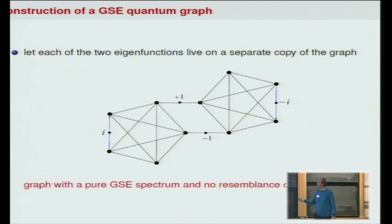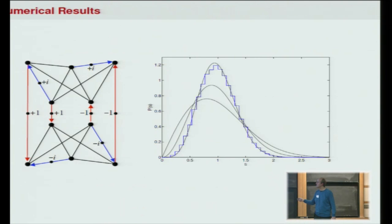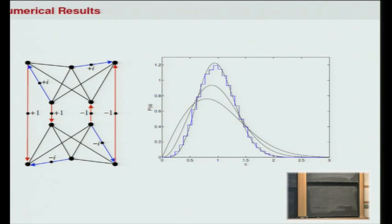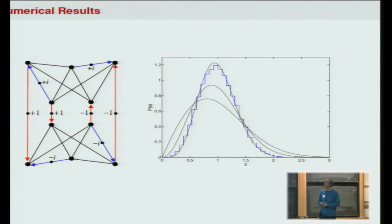We did numerics for a slightly more complicated graph — with two bonds attached to each of the special vertices — and the result is very close to the GSE curve: the blue numerical result matches the black GSE curve very well.